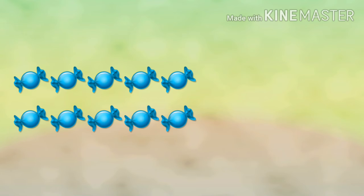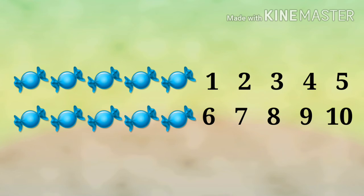Next, count the numbers of candies. 1, 2, 3, 4, 5, 6, 7, 8, 9, 10. There are 10 candies.